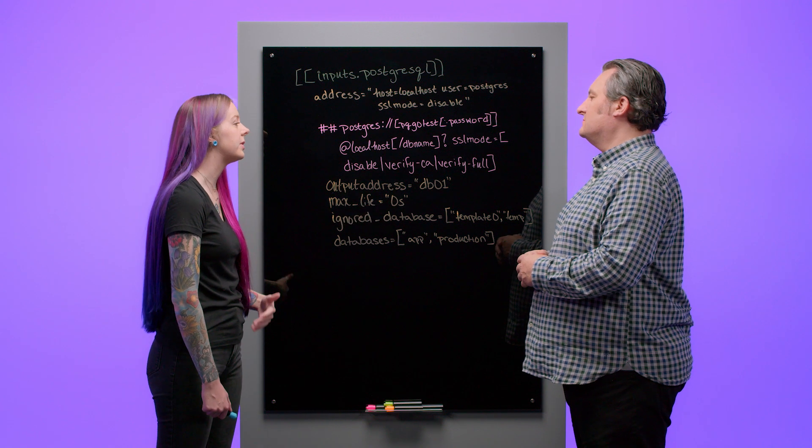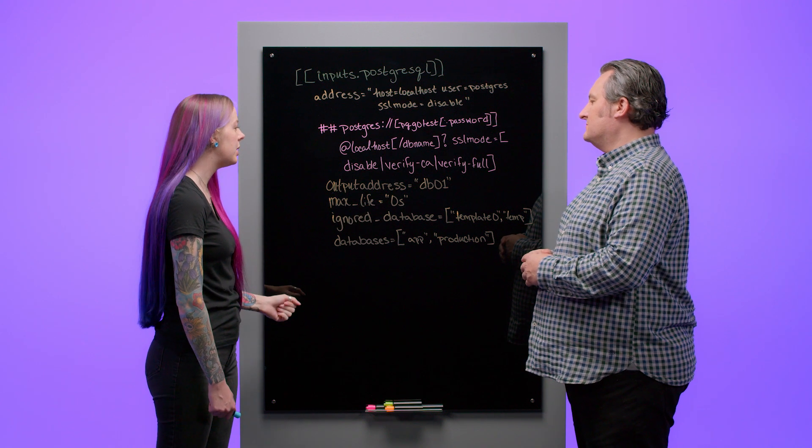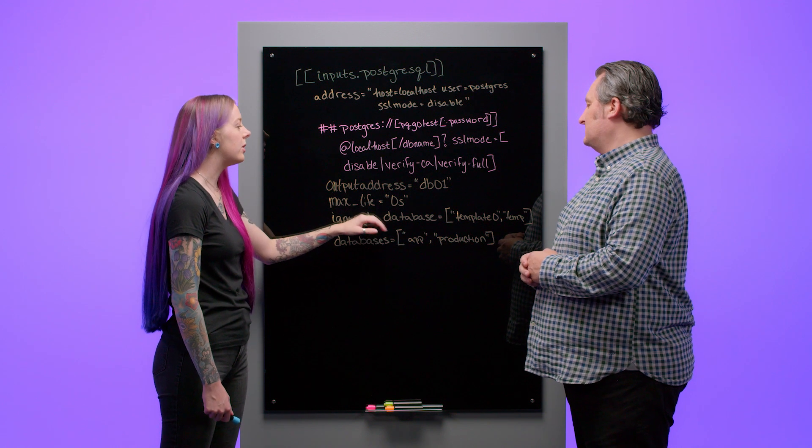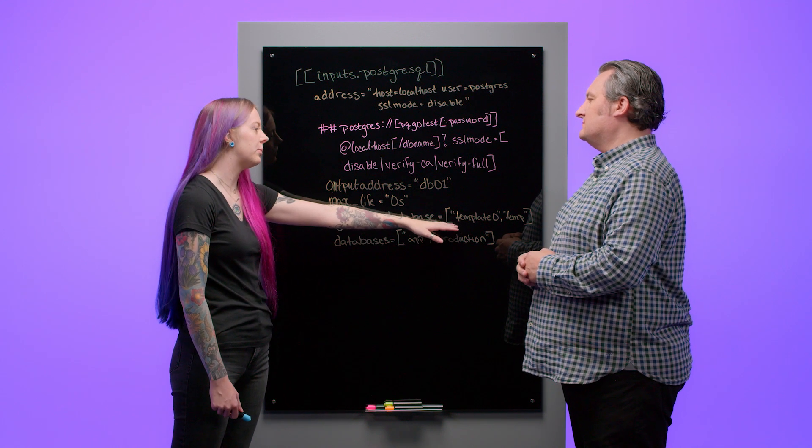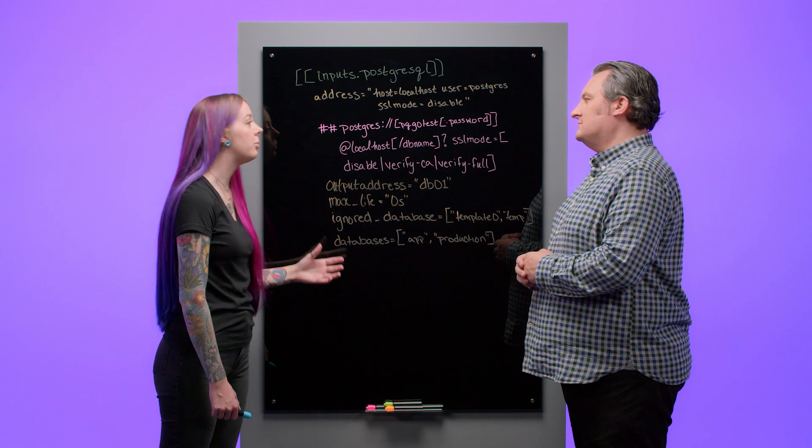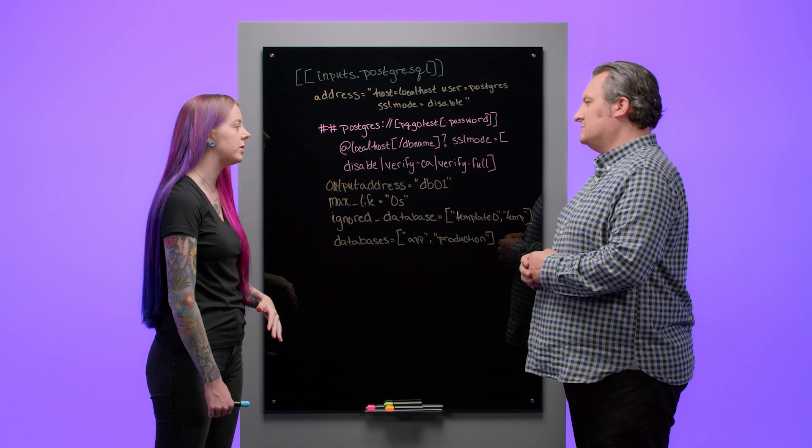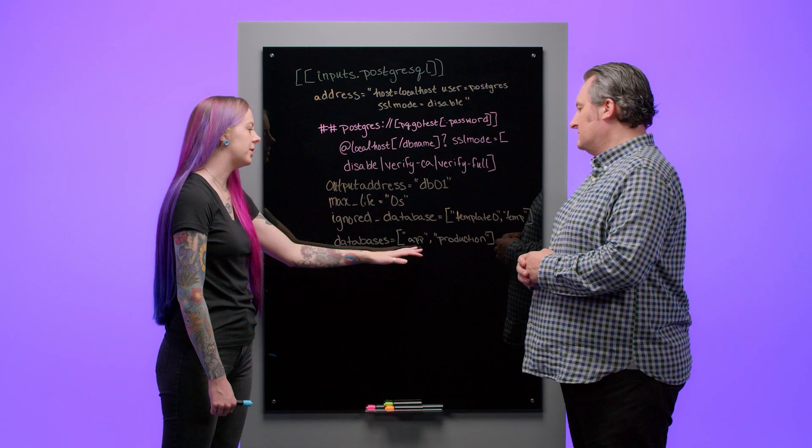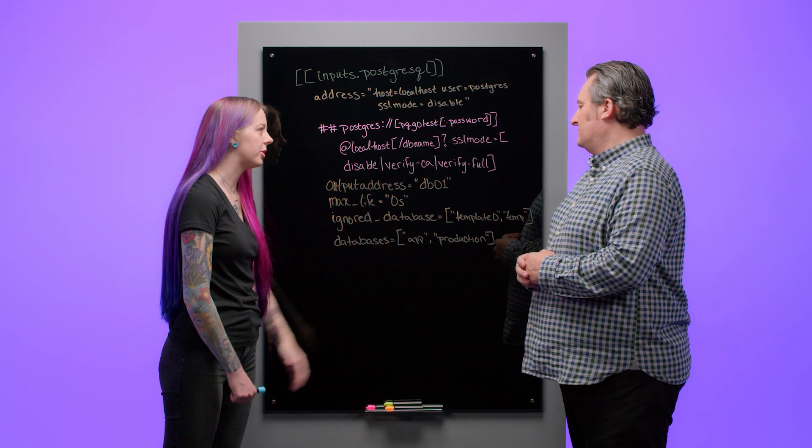And what's the difference between ignored database and databases? You cannot use them together. You have to pick one. Ignored databases is going to ignore what you list. In this example, template zero and temp. It'll pull data from all other databases you have. Where databases is going to ignore everything except what is listed. In this case, app and production.